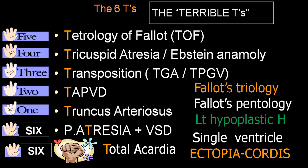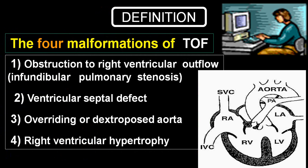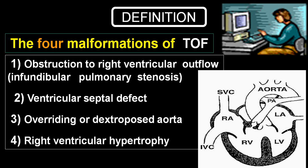We are going to discuss today only Fallot's Tetralogy. There are four malformations: one, obstruction to the right ventricular outflow, that is infundibular pulmonary stenosis — not valvular stenosis but infundibular; two, ventricular septal defect; three, dextroposition or overriding of aorta, where the aorta opens into the right ventricle; and four, right ventricular hypertrophy. That is why it is called 'tetra' — meaning four.